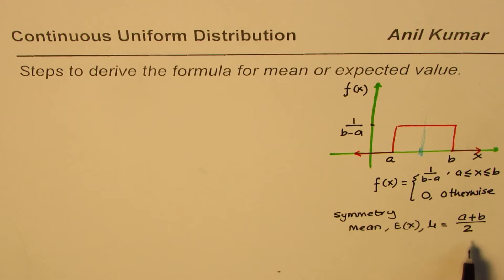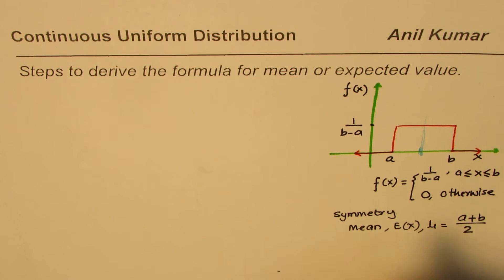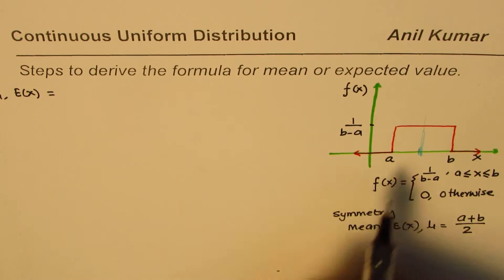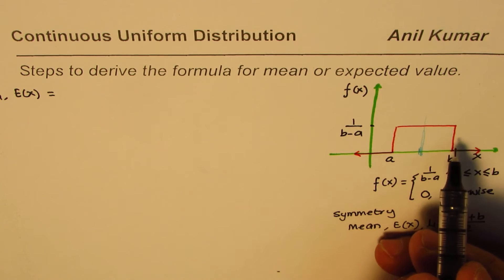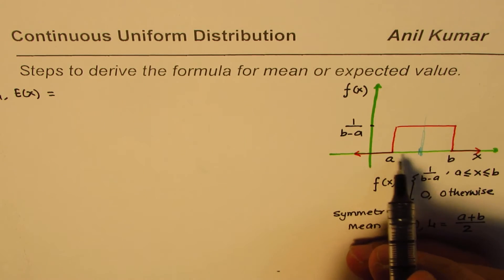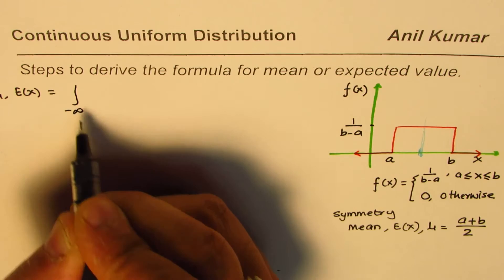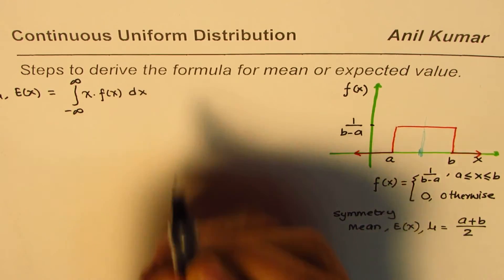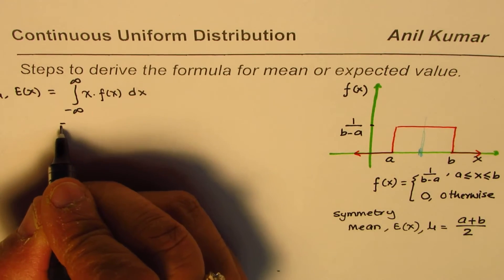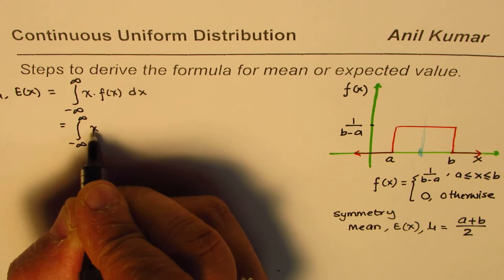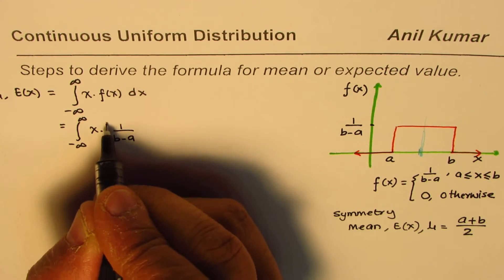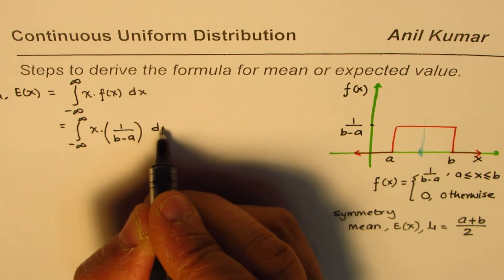The mean or expected value is equal to the integral over the entire region: the integral from minus infinity to plus infinity of x times f of x dx. The function f of x is defined as 1 over b minus a, so we substitute that in.